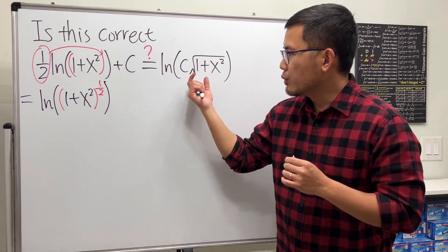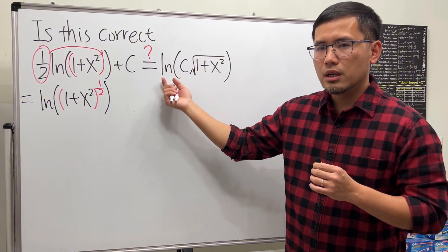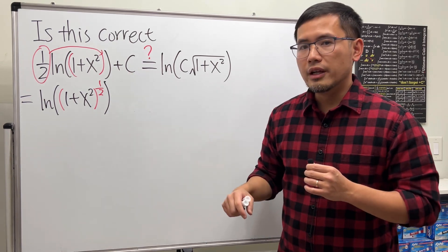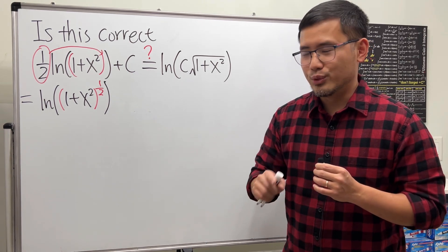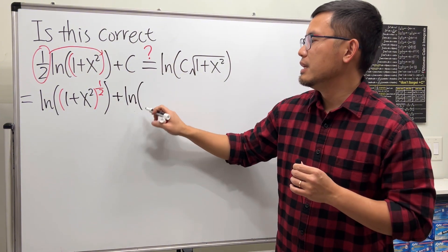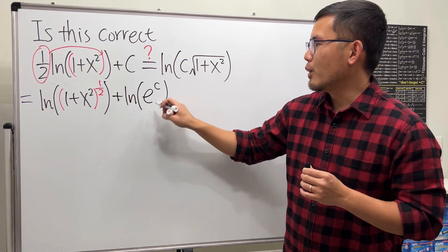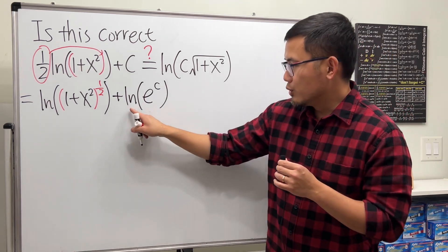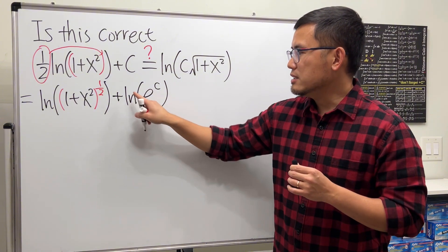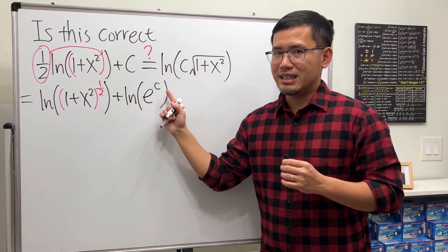You see, on the right hand side we only have one natural log. For this c, this is what we are going to do: I want to introduce a natural log here as well. To do so, we add ln of e to the c's power. We want to introduce the ln, so force it, but remember ln and e cancel so you can get a c back like this.